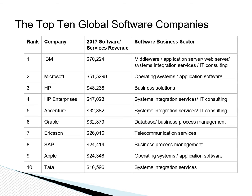One of the alternatives to internal development is using an outside software organization. This is a major business and there are major global software companies. This list from 2017 shows the largest players in this space, and these organizations provide different expertise. From your perspective, any of these organizations are potential employers — not only for software developers, but also for people who have project management expertise.